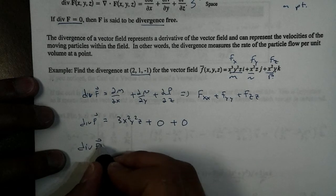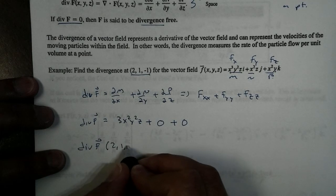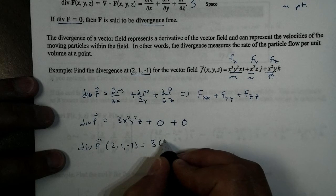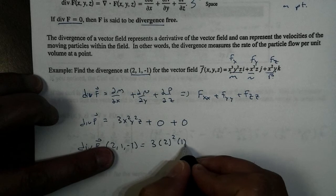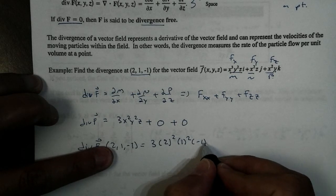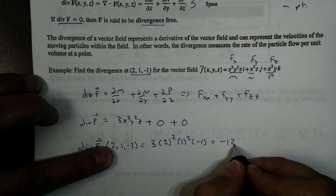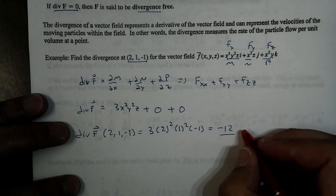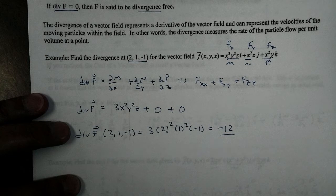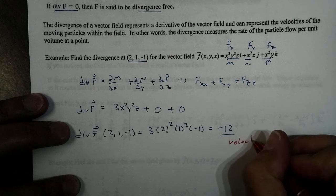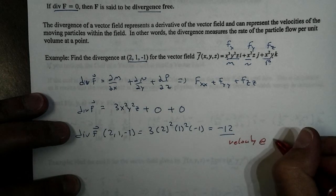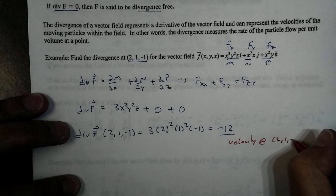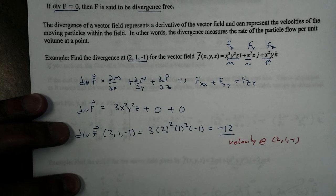My divergence at our point (2, 1, -1), we get 3 times 2² times 1² times -1, and of course that becomes -12. So, what is this telling us? Well, this tells us that the velocity at the point at (2, 1, -1). That's going to give us our velocity at that point.